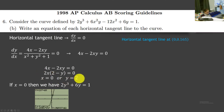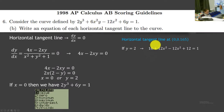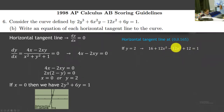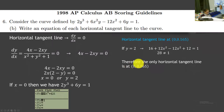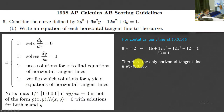What about if y equals 2? Substituting: 2 cubed is 8, 8 times 2 is 16. We get 16 plus 12x² minus 12x² plus 12. The 12x² terms cancel, and we get 16 plus 12 equals 28 equals 1, which doesn't make sense — 28 does not equal 1. That means there is no point on the curve where y equals 2. So our only horizontal tangent line is at the point (0, 0.165). We get 4 points: 1 for setting dy/dx equal to 0, 1 for solving, 1 for finding the equations, and 1 for verifying which solution makes sense.